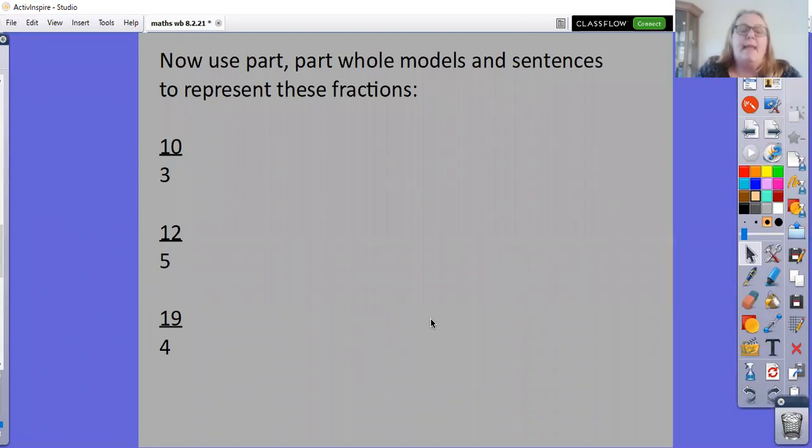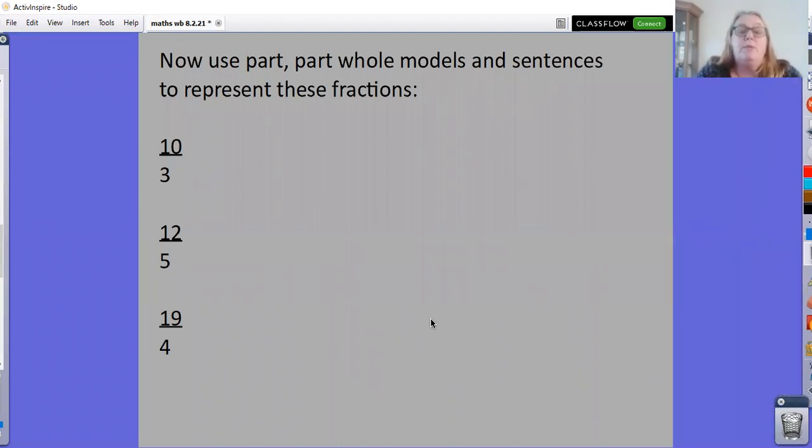So now you've had a go at using part-part-whole models and writing a stem sentence to explain what it's showing. See if you can do it for these three fractions. They're all fractions bigger than one. They may contain one whole and they contain more than one whole. But first thing you need to look at is what the denominator is, how many parts there are. That will tell you how many whole ones you've got. Good luck and I hope you get on well with it.